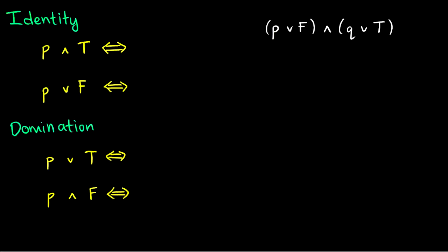The first laws I want to introduce are the identity laws, which we can prove really quickly with truth tables. So p AND true is logically equivalent to p — since the tautology is always true, this just reduces to whenever p is true. Similarly, p OR false is true when either p is true or F is true, but F is never true, so this is just the same as p being true. These are identity laws because given p, they output p again.